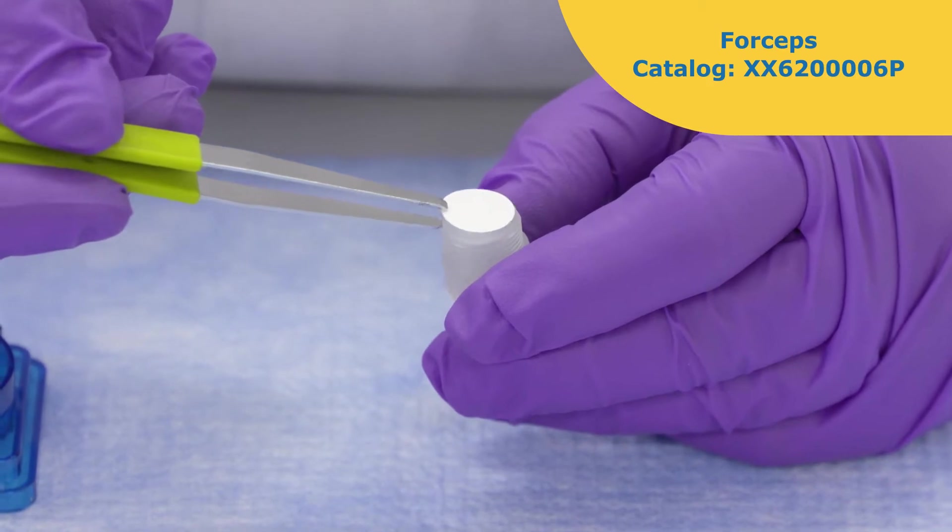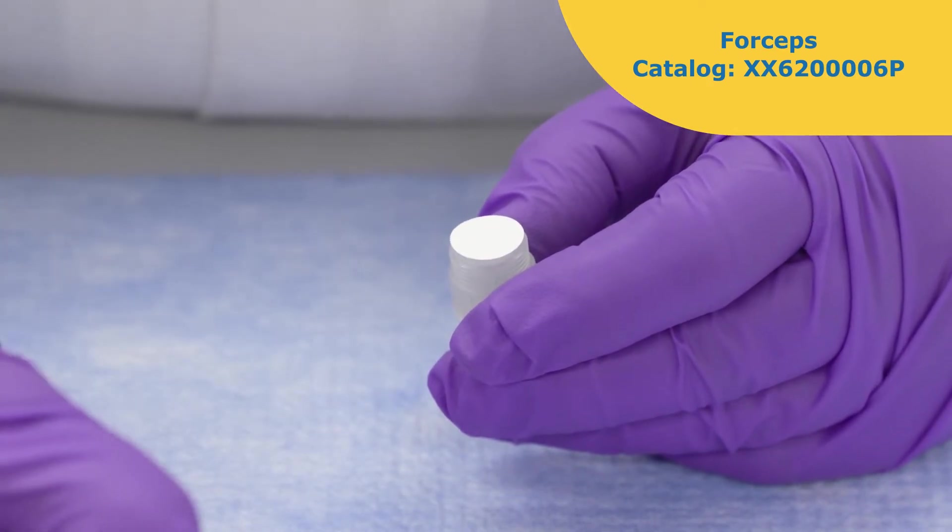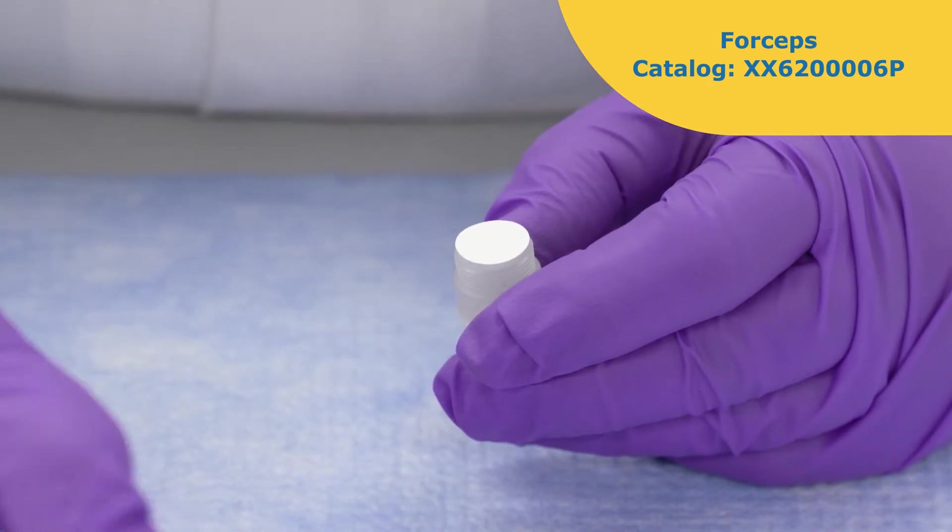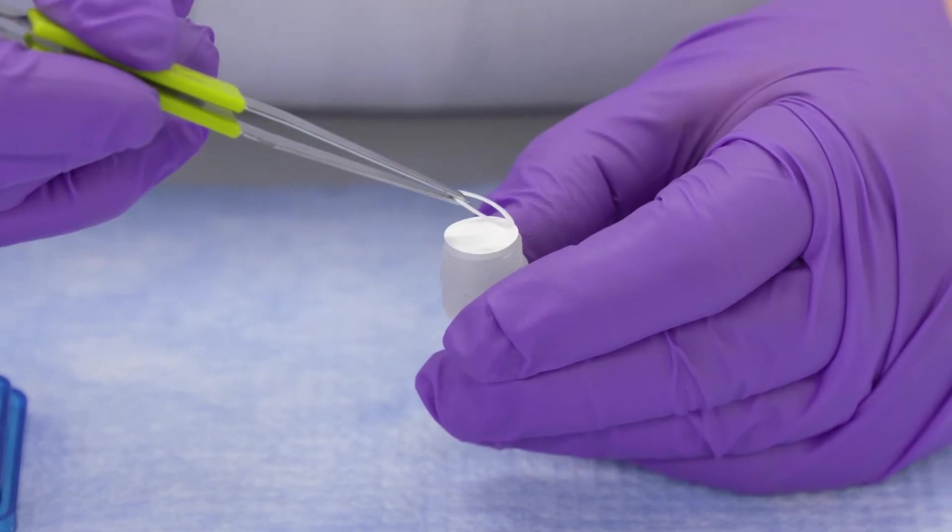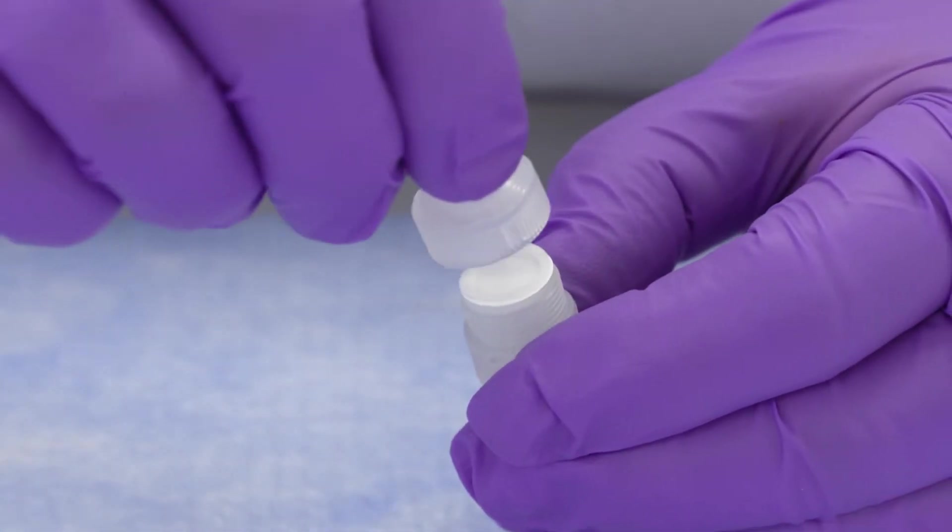Using smooth tip forceps, center the filter on the holder support screen, place the gasket on top of the filter, then replace and tighten the top of the filter holder.